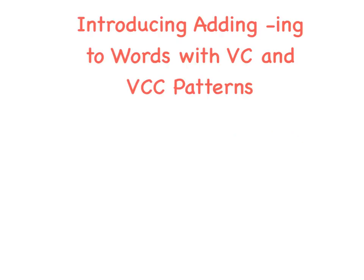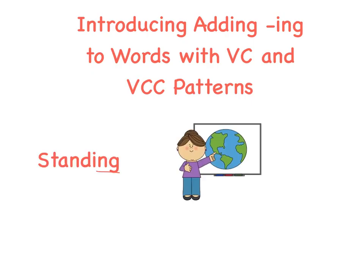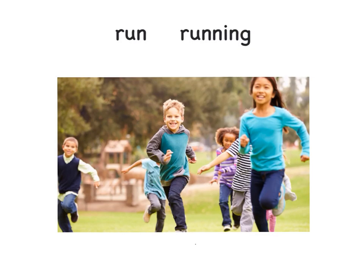Now we're going to introduce adding ING to words with the vowel consonant and vowel consonant consonant patterns. When ING is added to a word, it means that something is happening right now. If I tell you I'm standing in front of the class, the ING on standing lets you know that I am standing here right now. When I add ING to words that have a short vowel followed by one consonant, I usually double the final consonant, like in the word run — we have a short U vowel sound, so I double the consonant N when I add ING.